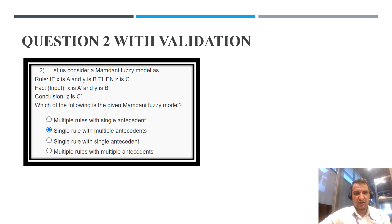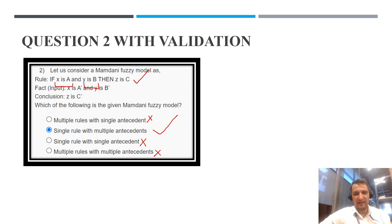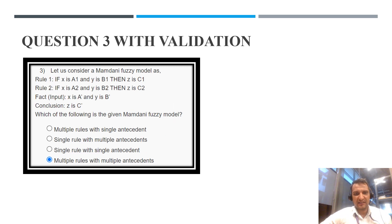Question number 2: consider a Mamdani Fuzzy model rule — if X is A and Y is B then Z is C. In this question there is only a single rule, so options with multiple rules (A and D) are automatically eliminated. We have to determine whether it has multiple antecedents or a single antecedent. Here X is A (first antecedent) and Y is B (second antecedent), so it is single rule with multiple antecedents. Correct option is B.